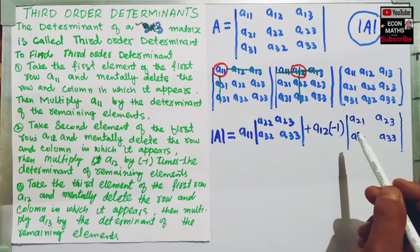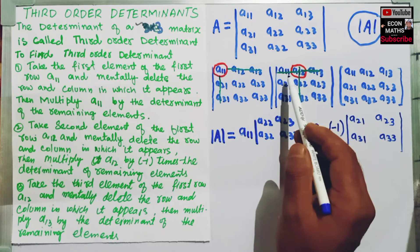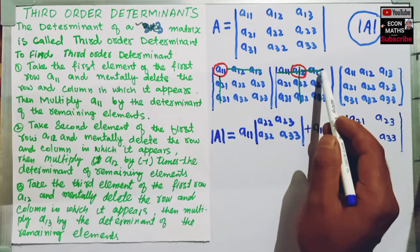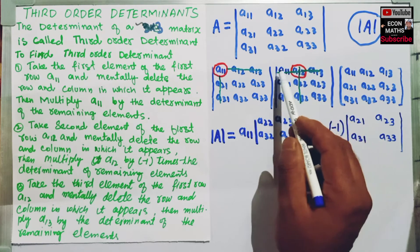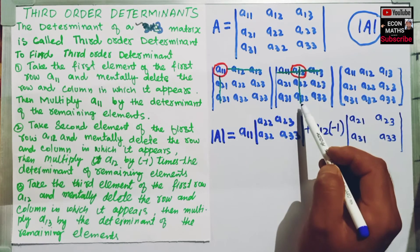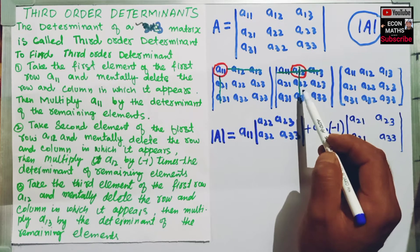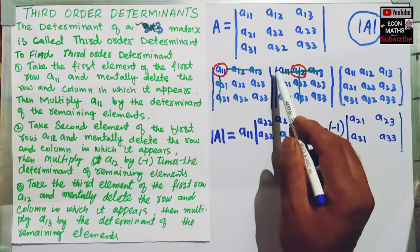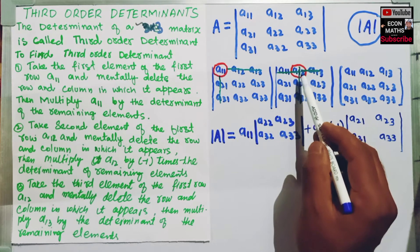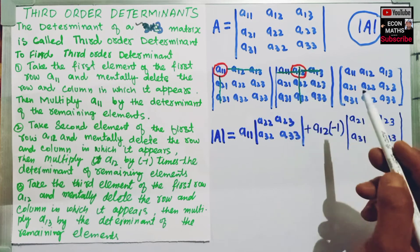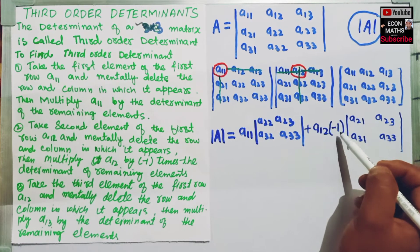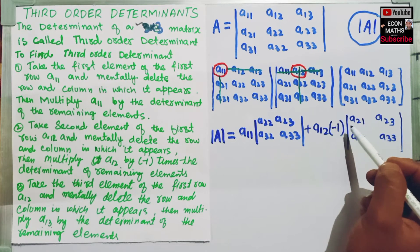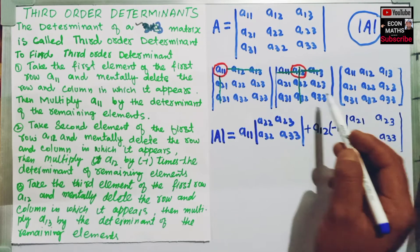To repeat the second step: we take the second element of the first row and mentally delete the row and the column in which it appears. We delete this row and this column. Then we multiply A12 by minus 1 times the determinant of the remaining elements.